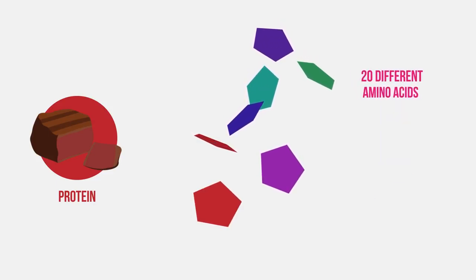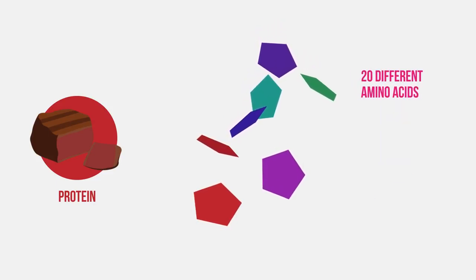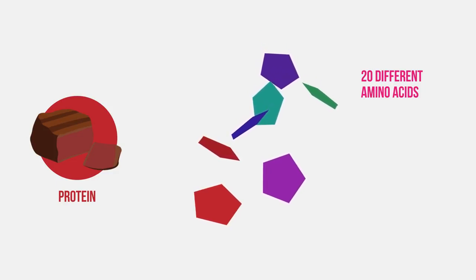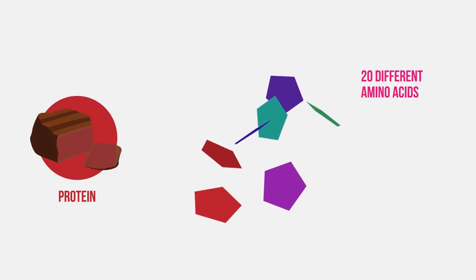There are 20 different amino acids that make up proteins. The order of amino acids varies in different proteins and so 20 different amino acids means an almost infinite number of different proteins can be made.